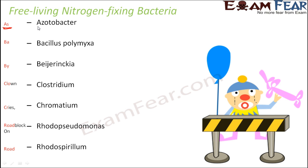'As' reminds you of Azotobacter. 'Ba' reminds you of Bacillus. 'Bee' reminds you of Beijerinckia. With 'clown' you remember Clostridium. 'Cry' reminds you of Chromatium. 'Road' is for Rhodopseudomonas, and again 'road' is for Rhodospirillum. This is how you can remember all the names which fall under the category of free living nitrogen fixing bacteria.